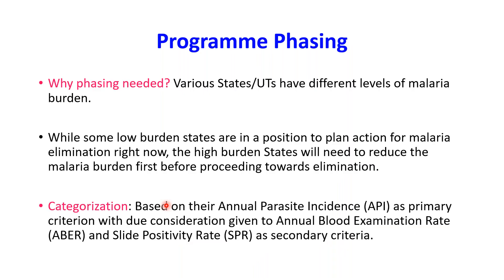Program phasing was needed because various states and union territories have different levels of malaria burden. Some low-burden states are already in a position to plan for malaria elimination right now, while high-burden states will need to reduce the malaria burden before proceeding towards elimination.